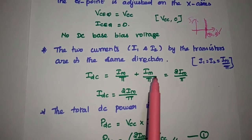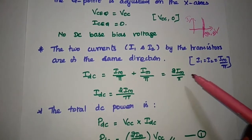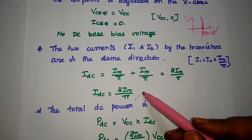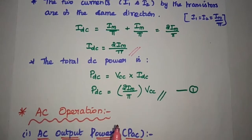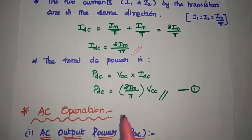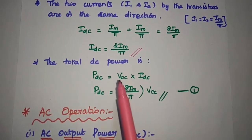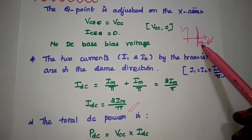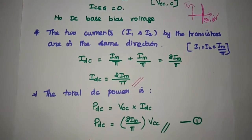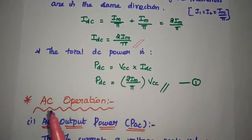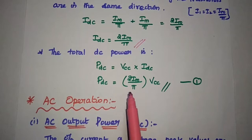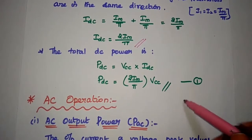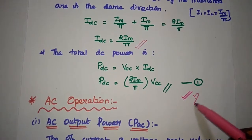The overall DC current IDC is equal to Im/π + Im/π, which gives 2Im/π. This is the IDC value — the DC current in this push-pull amplifier. The total DC power is equal to VCC × IDC, where VCC is the supply voltage. Since the Q point is at VCC, we consider only VCC for the output power. So power at DC equals (2Im/π) × VCC. Consider this as the first equation — it is very important to find out the efficiency.